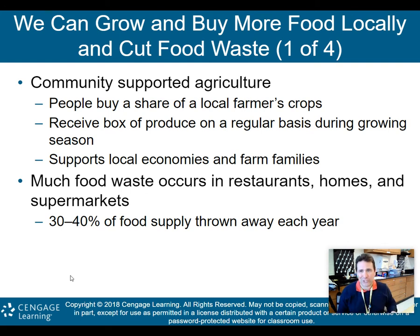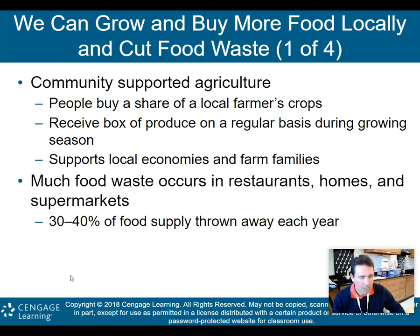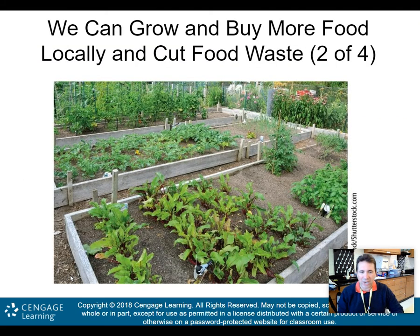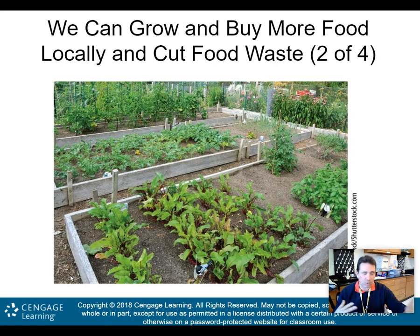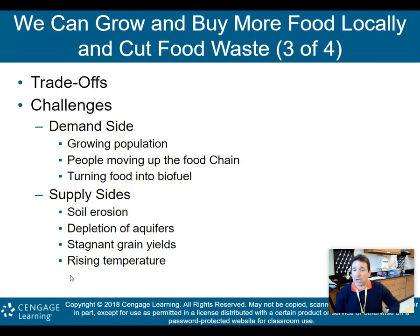Much of our food waste occurs in restaurants, homes, and supermarkets — 30% to 40% of our food supply is thrown away each year, especially in overdeveloped countries. That's why older generations insisted you finish everything on your plate. Here's an example of a community garden where people locally grow and share produce with their community. Food isn't being moved across countries, so fossil fuel use is reduced, and you can see polyculture — different types of crops grown together.